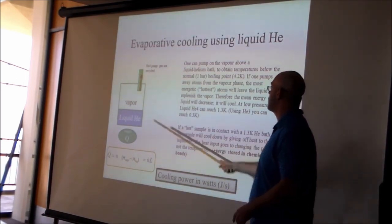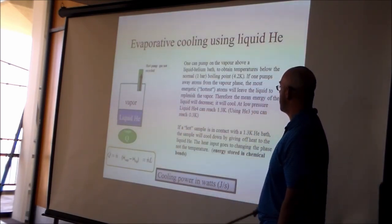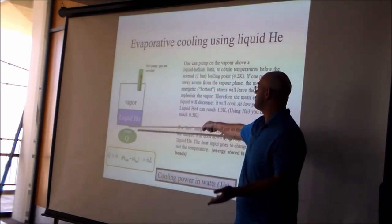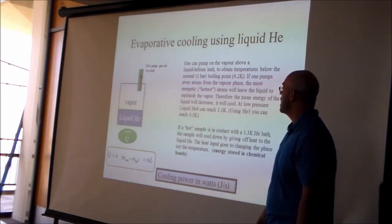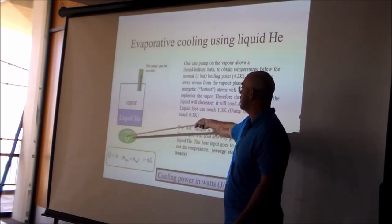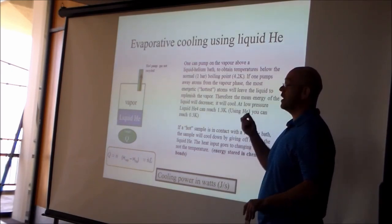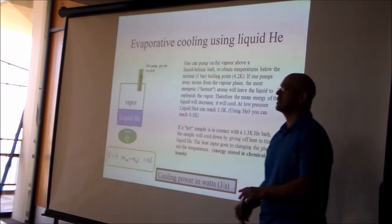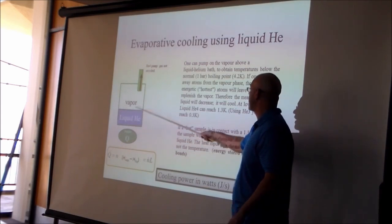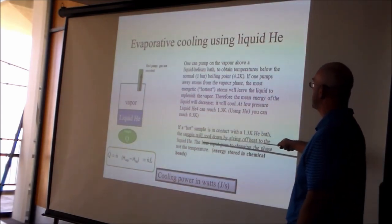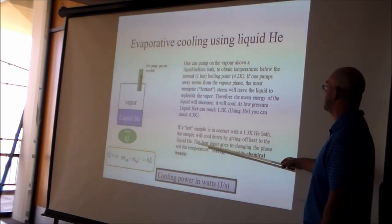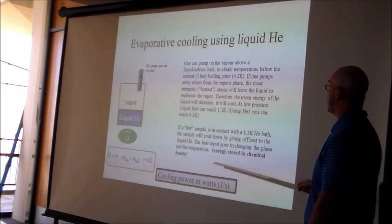You cannot cool helium-4 below 1.3 Kelvin because the vapor pressure becomes too small. The hot helium atoms leave from the liquid phase into the vapor phase, cooling the liquid. If you place a sample in contact with 1.3 Kelvin helium-3, heat flows from the sample into the helium. The heat input goes to changing the phase, not the temperature — there is a heat of vaporization that absorbs the incoming heat.